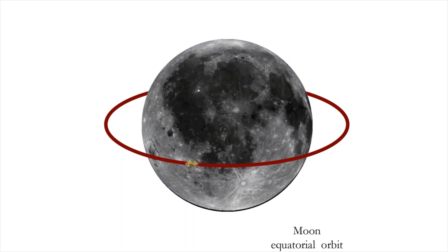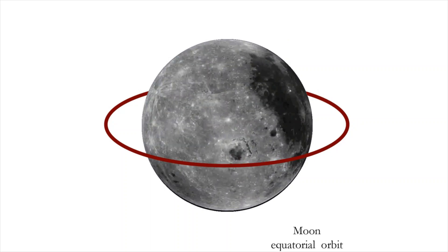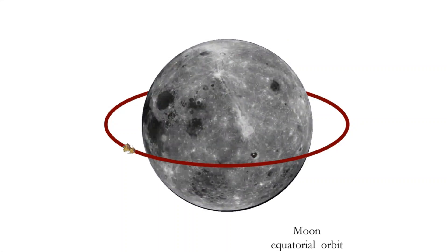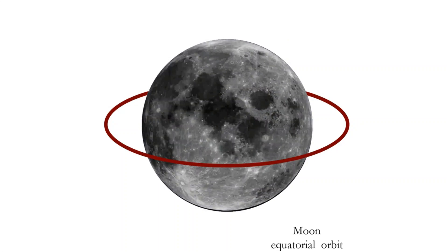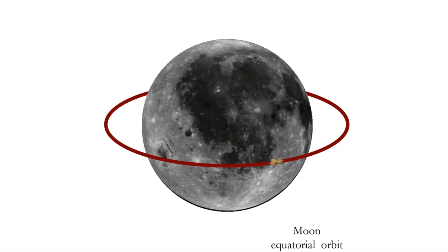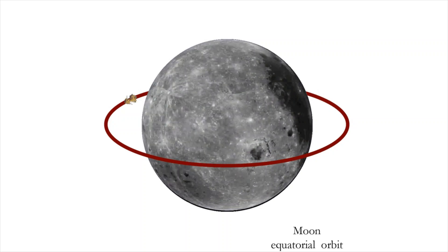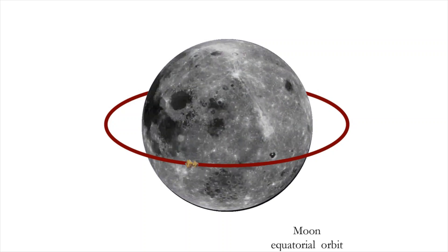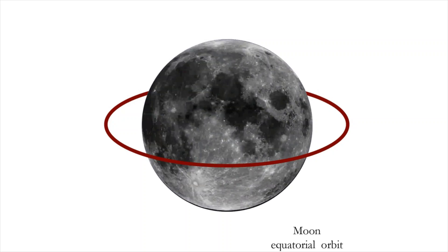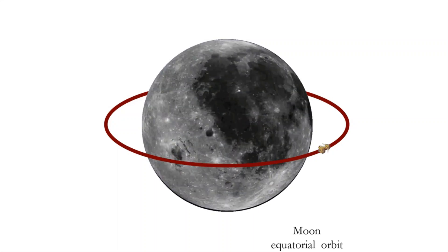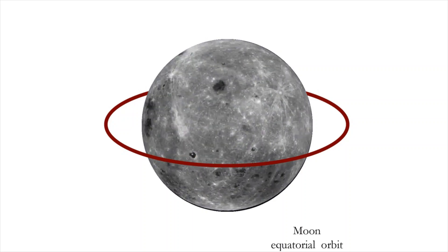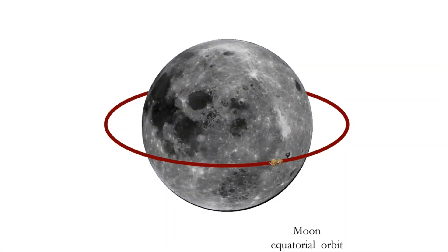A spacecraft in lunar equatorial orbit could only observe or photograph the lunar equatorial areas. Therefore, a spacecraft in the lunar equatorial plane cannot map the entire moon.